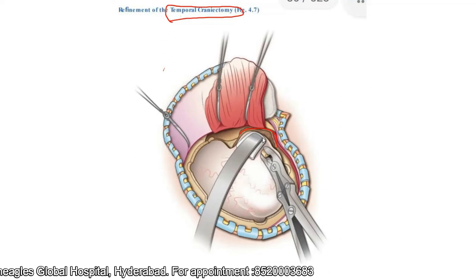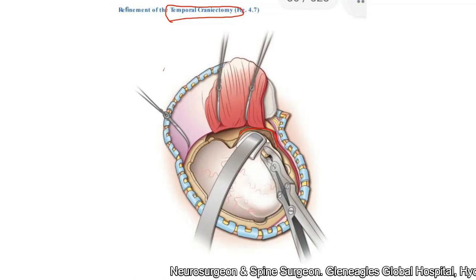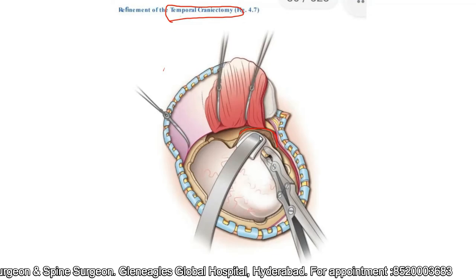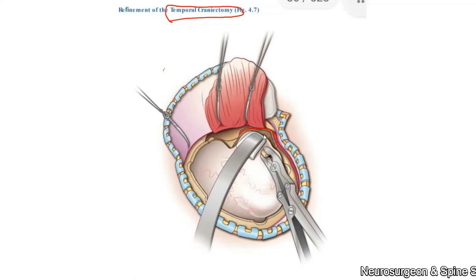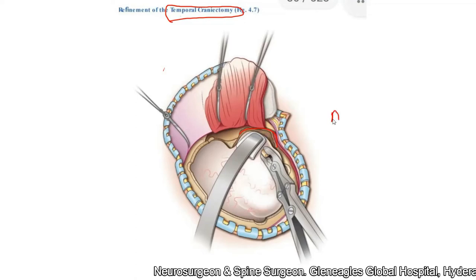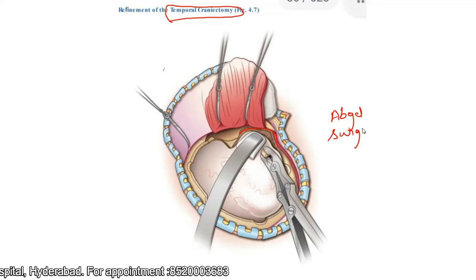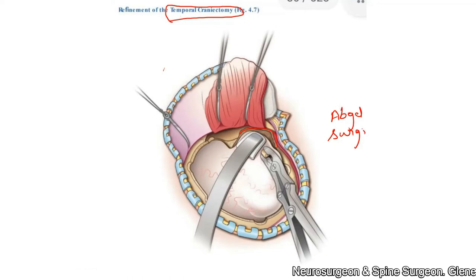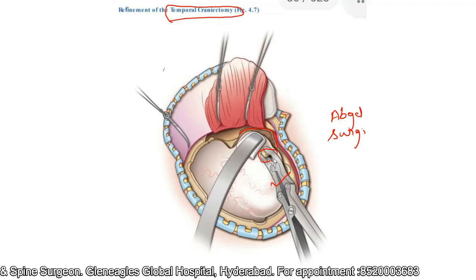At this time there may be a torn middle meningeal artery which may bleed. If it is torn and bleeding, try to secure it with a bipolar. Second, when you try to separate the dura from the bone, there may be some bleeding from the epidural plexus, which can be controlled with pressure using a combination of Abgel, Surgicel, and cottonoids. You can pack it and continue with the remaining procedure. Once done, you can use a Nibbler to remove that bone to reach the base of the middle cranial fossa.